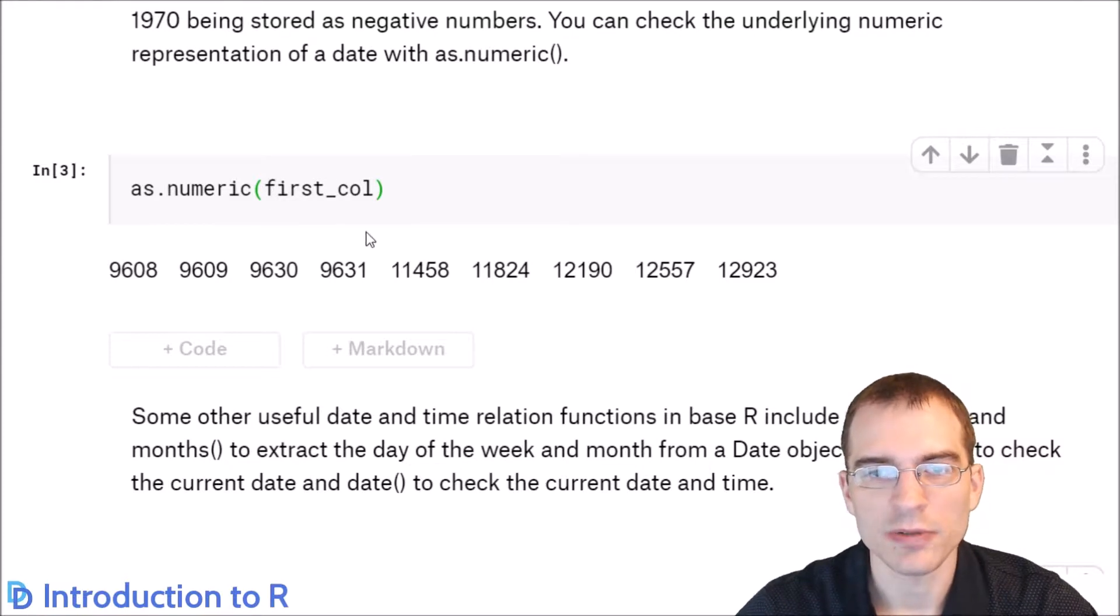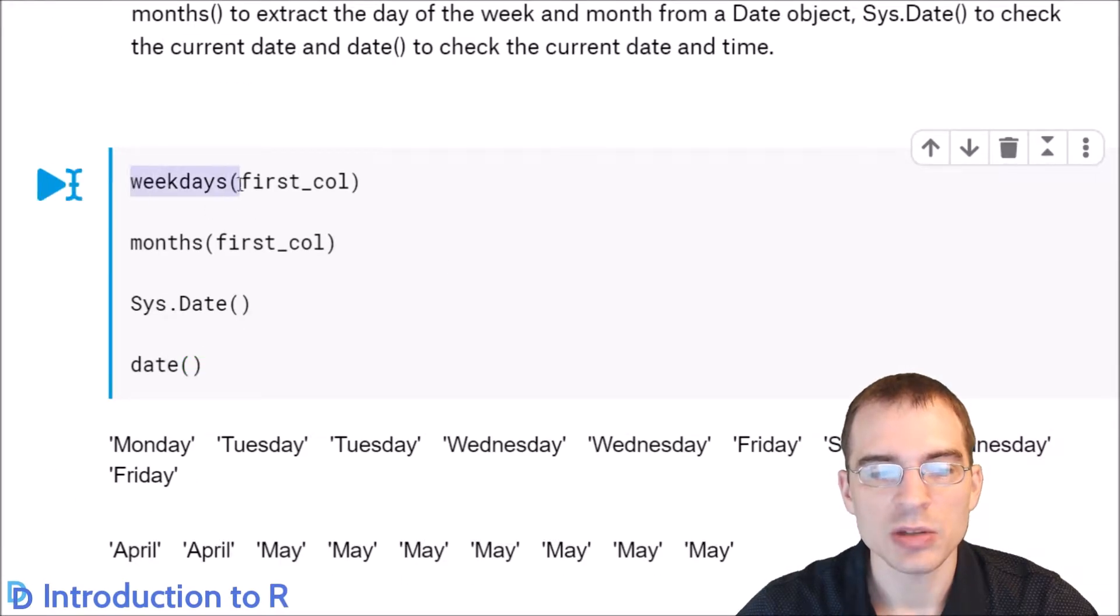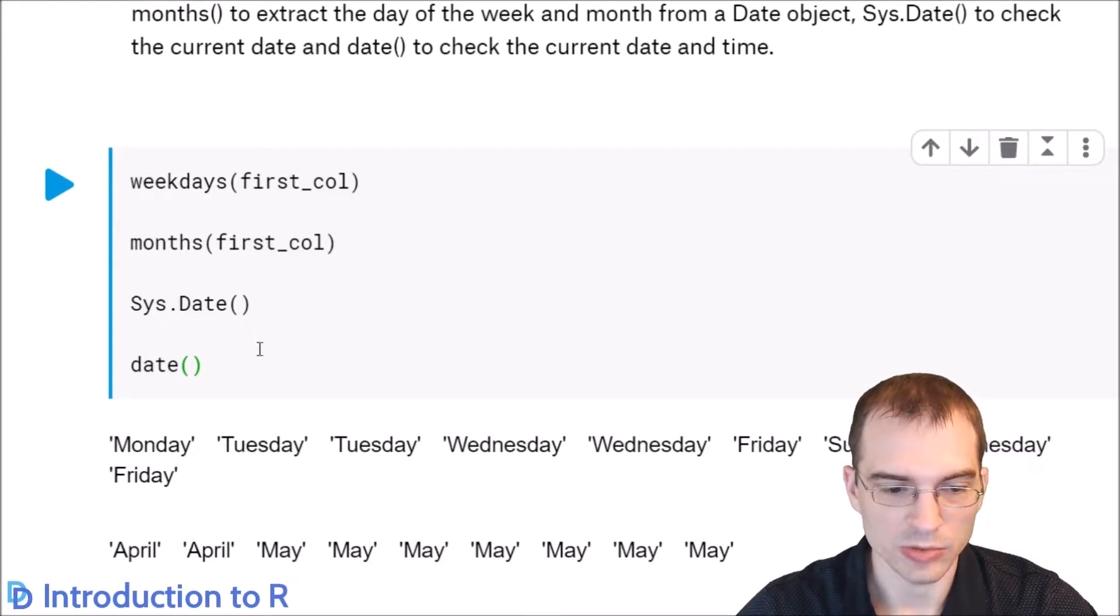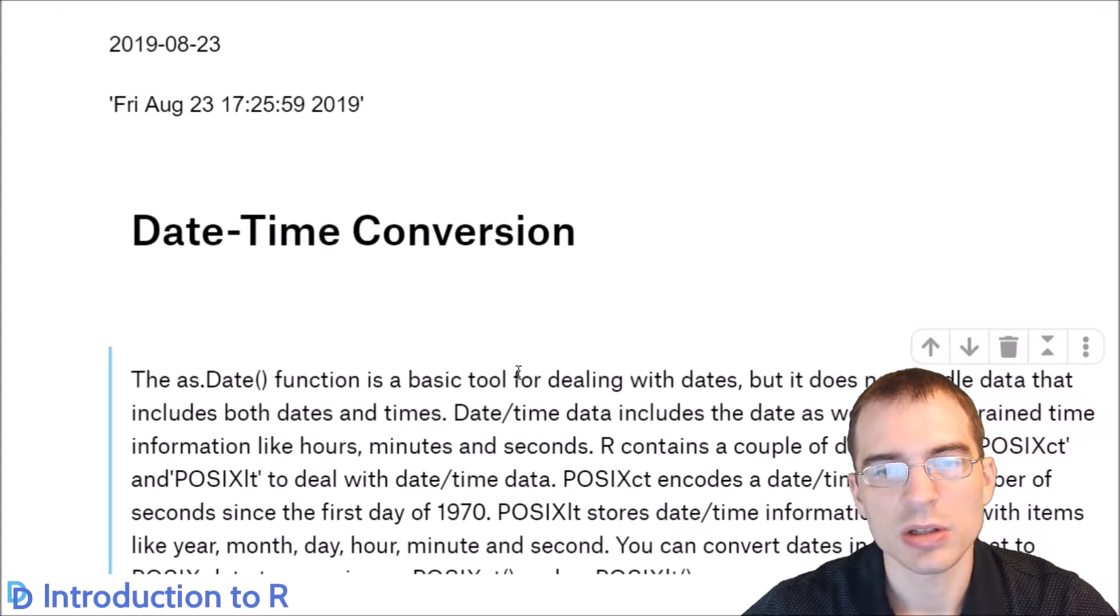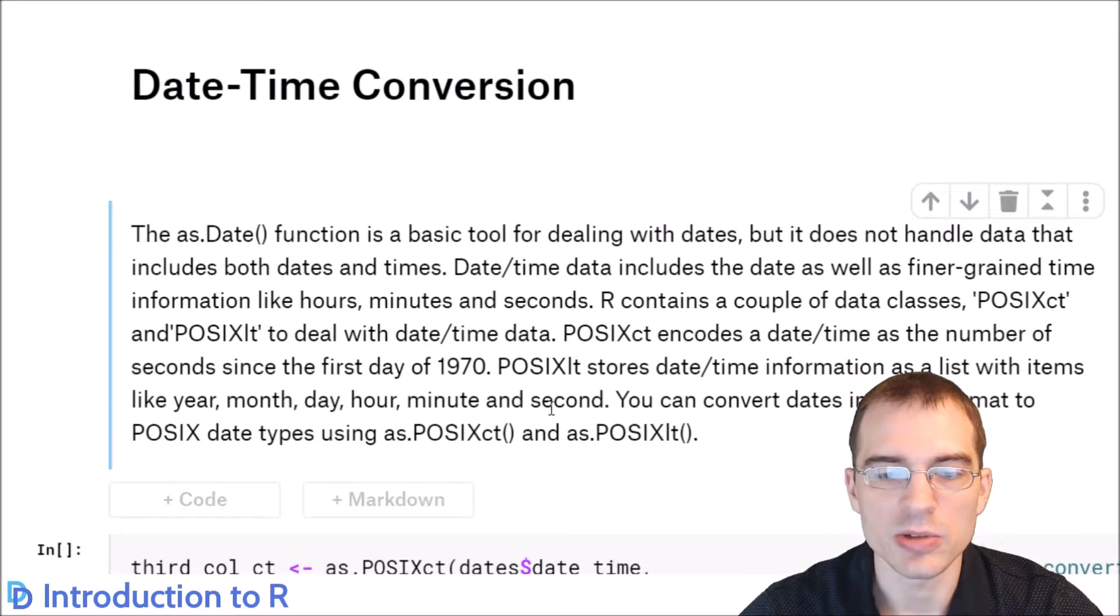Next we'll learn a few built-in R functions that are useful for doing things related to dates and times. The weekdays function will take something in date format and tell you the weekday. The months function will give you the month. Sys.date will tell you what the current date is. And date will give you the current date and time. The as.Date function that we saw earlier is a basic tool for dealing with dates, but it doesn't handle dates that include times as well.